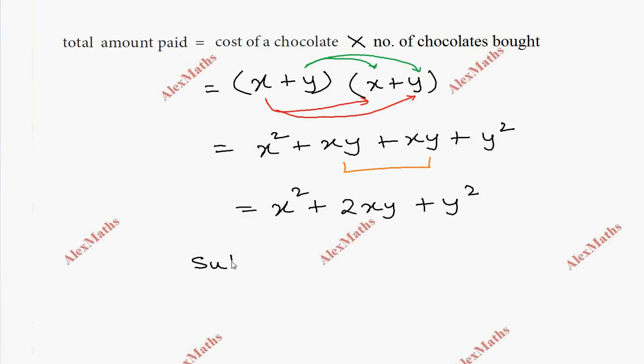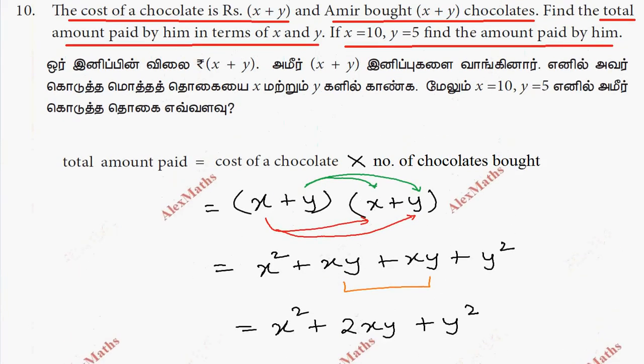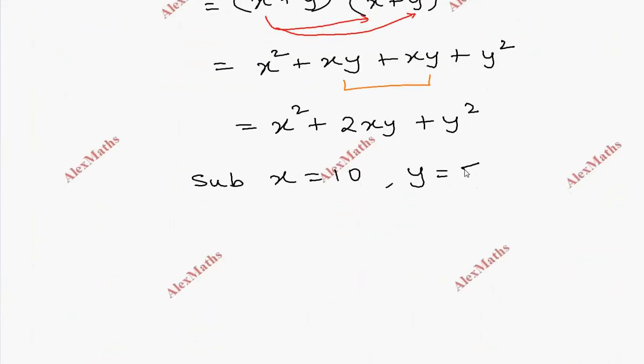So substituting x equal to 10 and y equal to 5. We substitute: 10 squared, that is the amount.